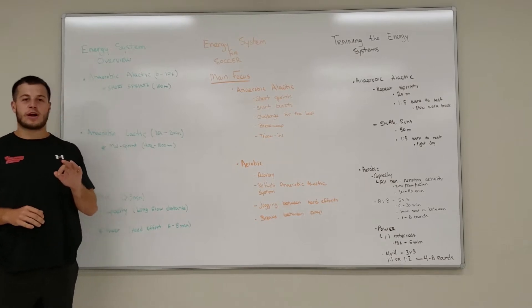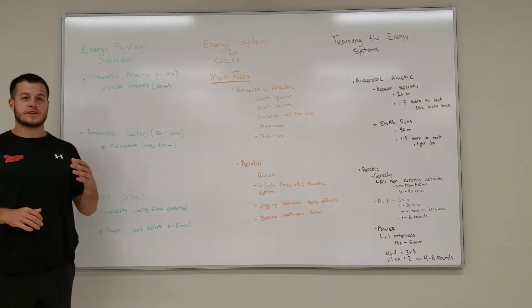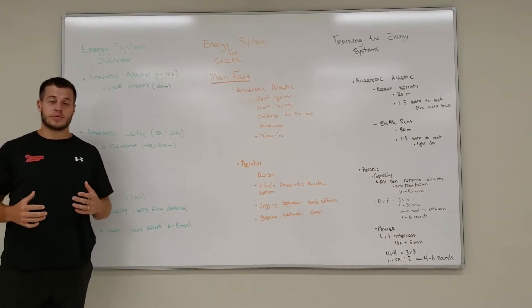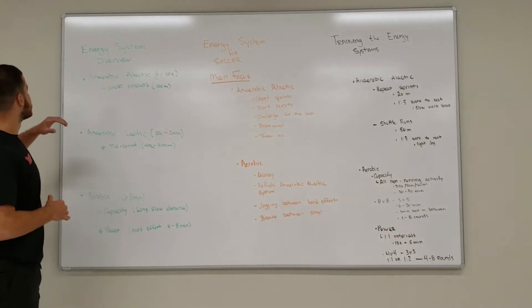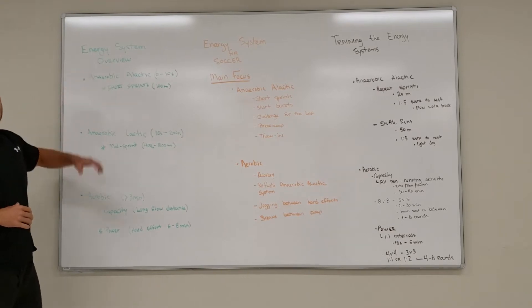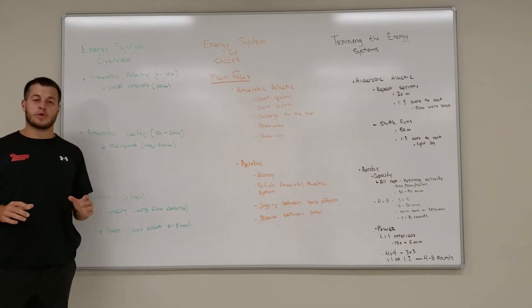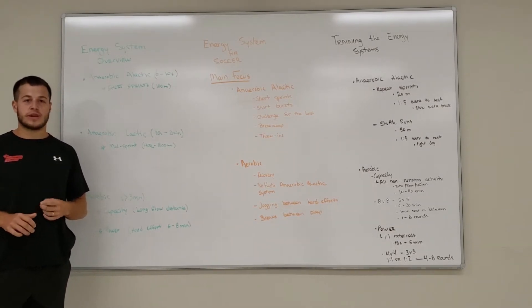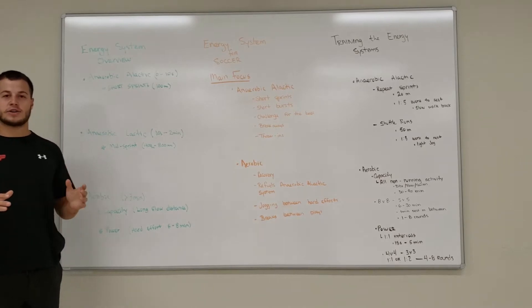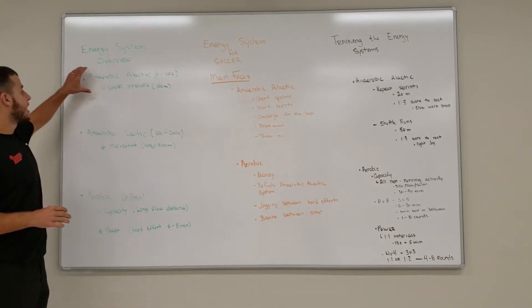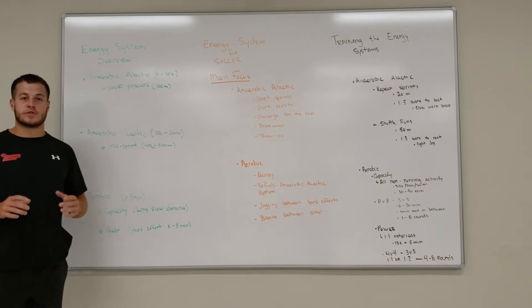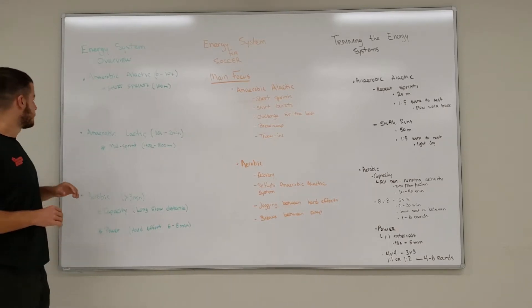We have three primary energy systems. They give us ATP, which is our energy source when we're doing any sort of activity. First we have our anaerobic alactic system — that's a really short burst, think like a 10 second sprint, a vertical jump, a broad jump, anything that happens under 10 seconds. That's anaerobic alactic and it uses phosphocreatine as our fuel source.